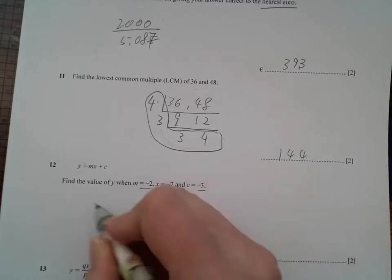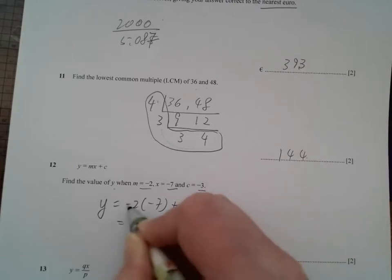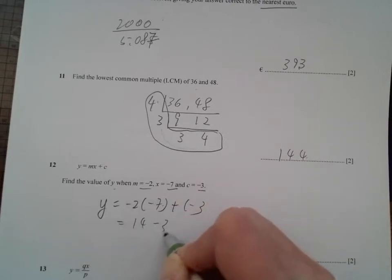Find the value of y if these values is given. So y would be used to negative 2 times negative 7 plus negative 3. So we have 14 minus 3 equals to 11.